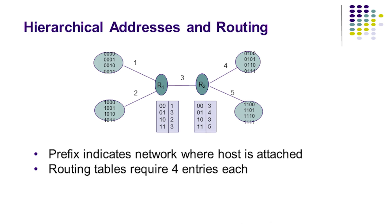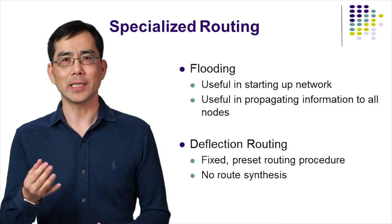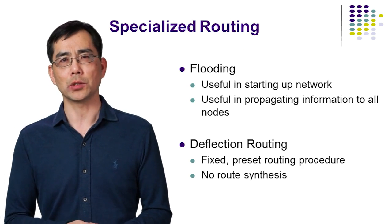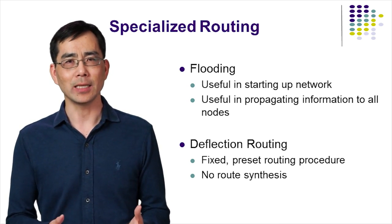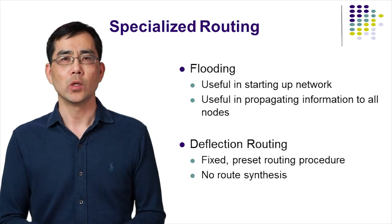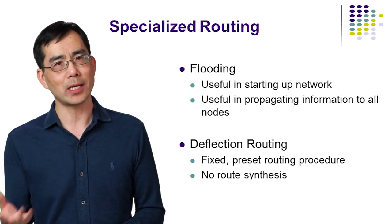In this way, routers need to examine only part of the address — the prefix — in order to decide how a packet should be routed. Next, we examine two specialized approaches to routing, called flooding and deflection routing, which are used in certain network scenarios.